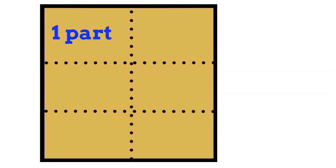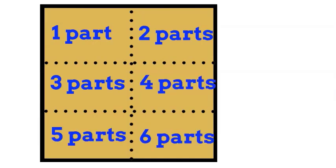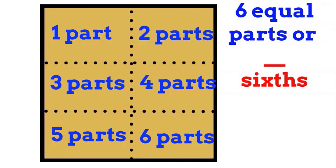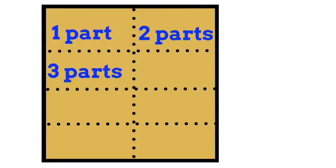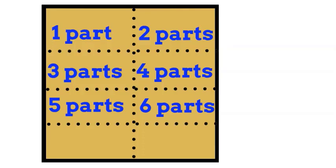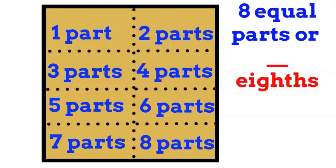Cut the sandwich this way, this way, and this way vertically. We would have one, two, three, four, five, six, seven parts — so this sandwich has six equal parts, or that's right, six sixths. Now cut it horizontally again, horizontally once more, one more horizontal line, and then a vertical line. We would have one, two, three, four, five, six, seven, eight parts. Eight equal parts would be eight eighths.